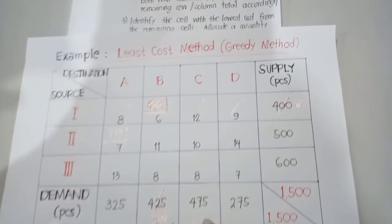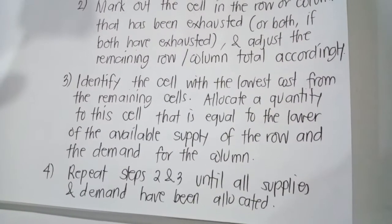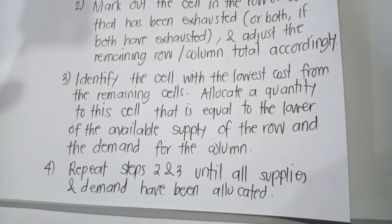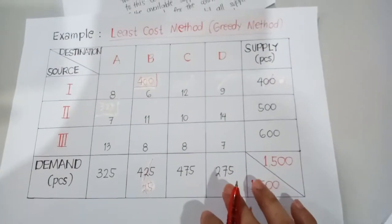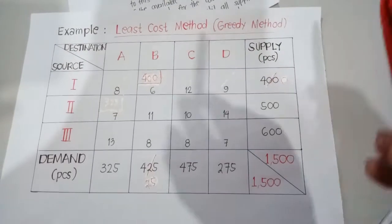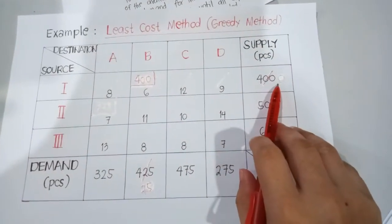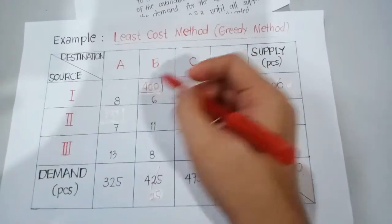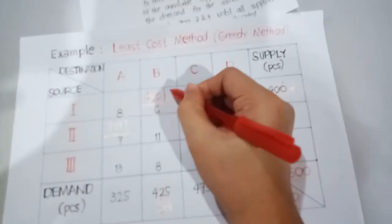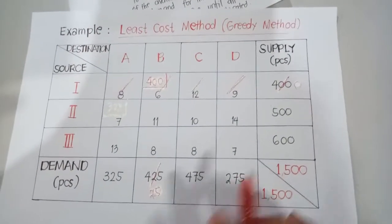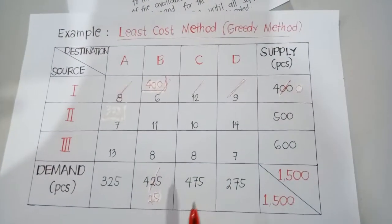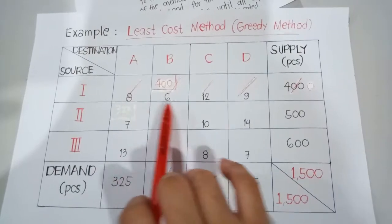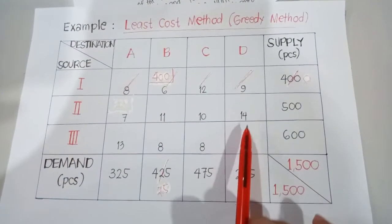Step number three says: identify the cell with the lowest cost from the remaining cells. Allocate a quantity to this cell equal to the lower of the available supply of the row and the demand for the column. Since source 1 has been exhausted, we mark out the entire row. Our remaining cells are four columns and two rows.